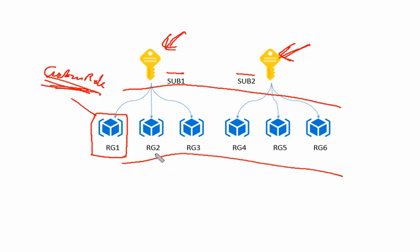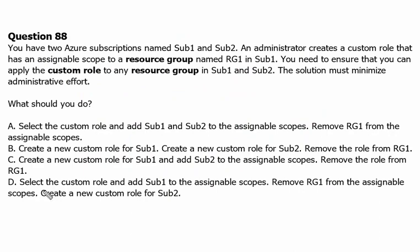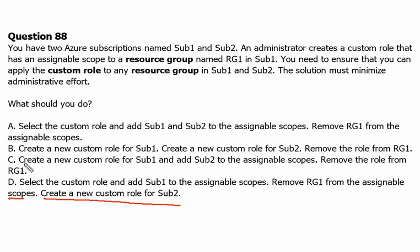Otherwise, if we go one by one to apply on each and every resource group, it will require more administrative effort. Let's look at the options. Option D: Select the custom role and add subscription 1 to the assignable scope, remove resource group 1 from the assignable scope, and create a new custom role for subscription 2. This solution would work but requires two different custom roles, meaning more effort to manage both. Therefore, option D is not suitable.